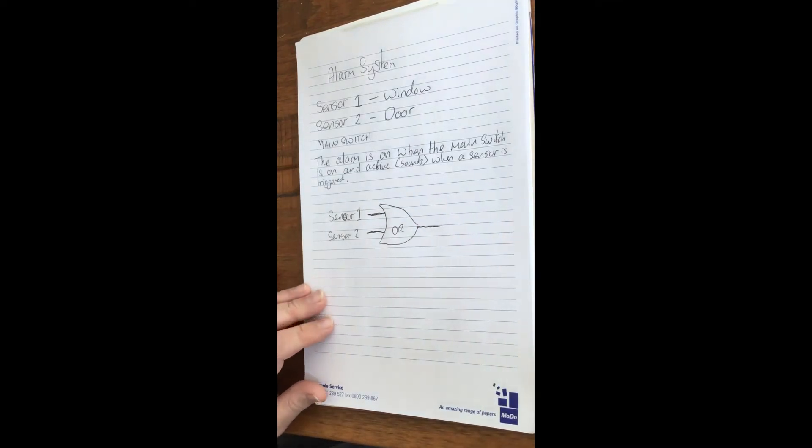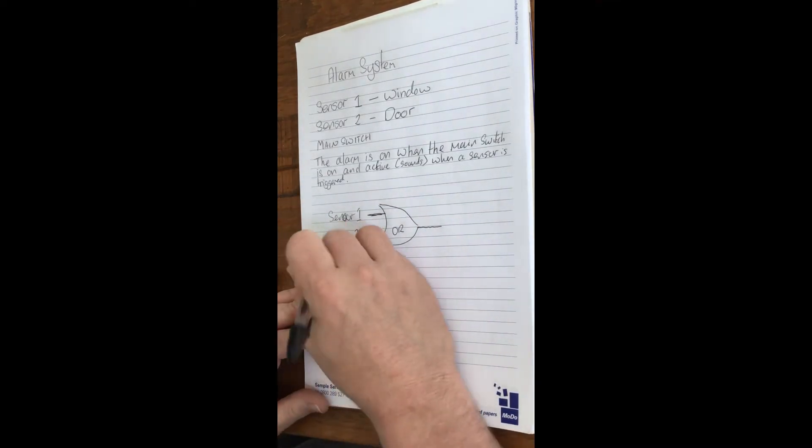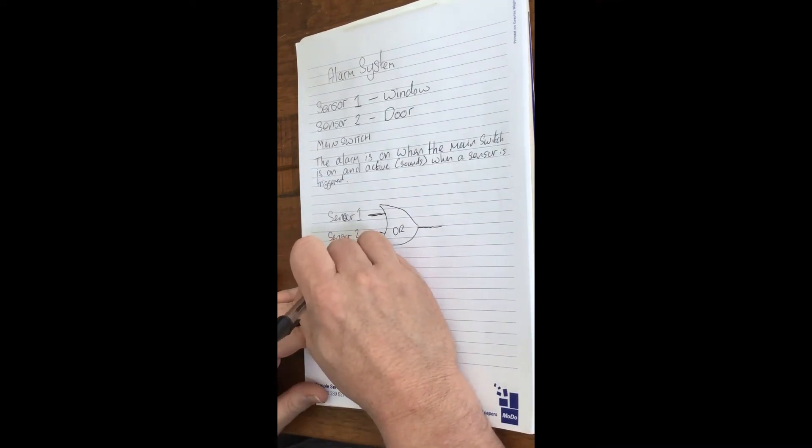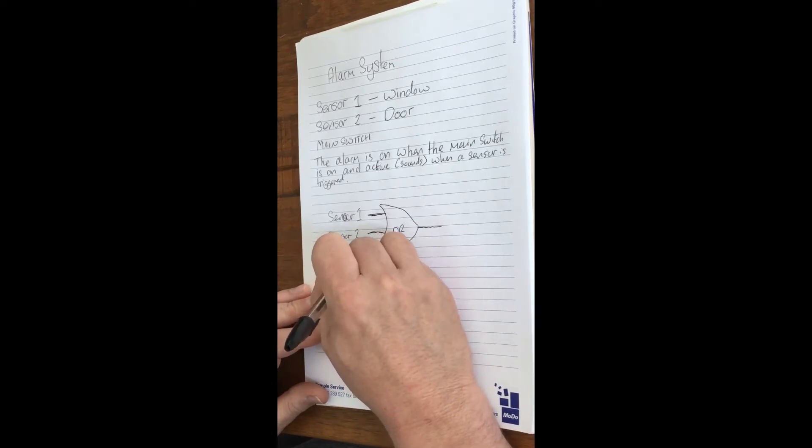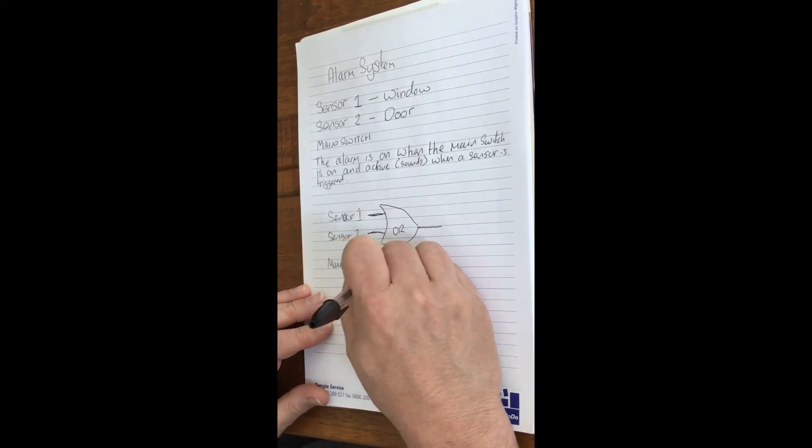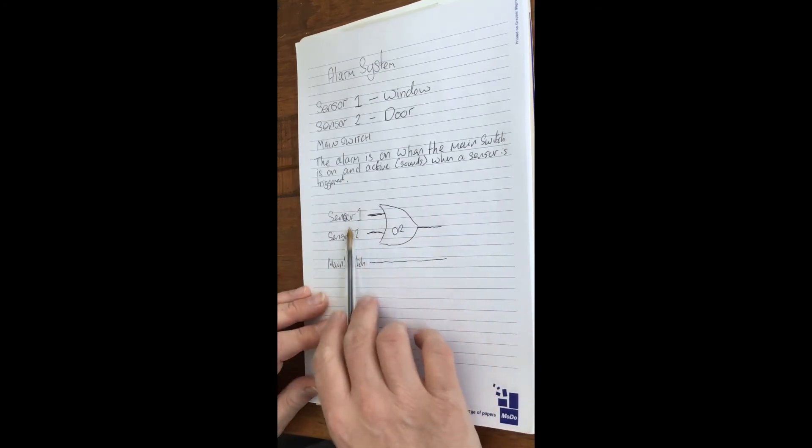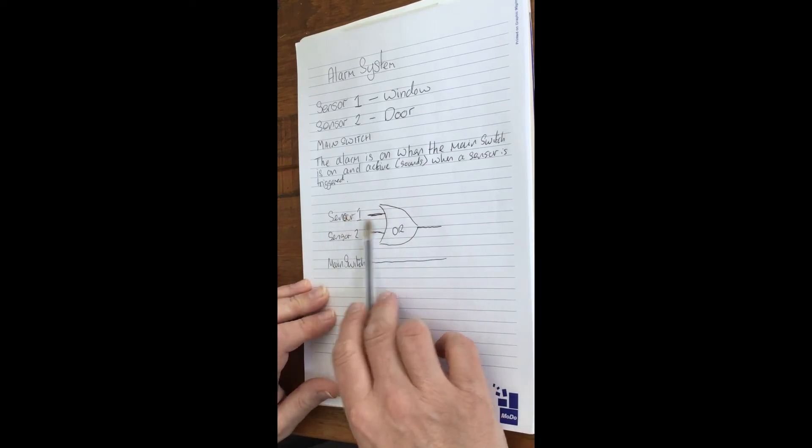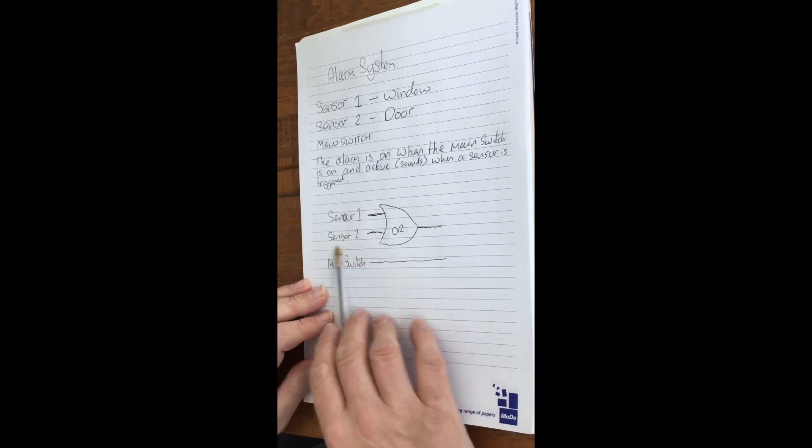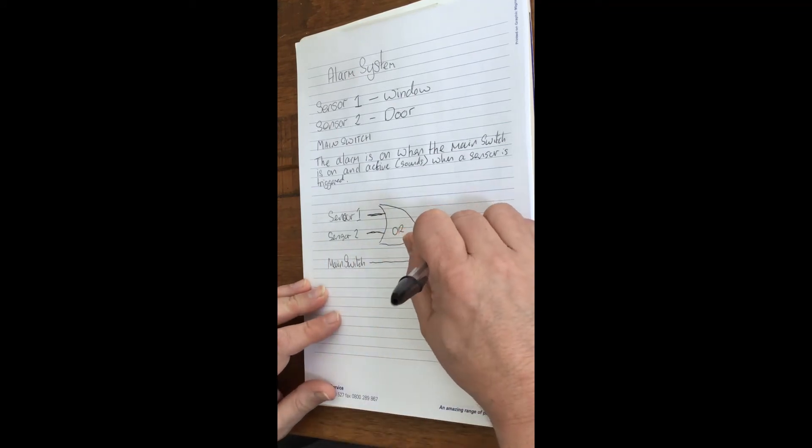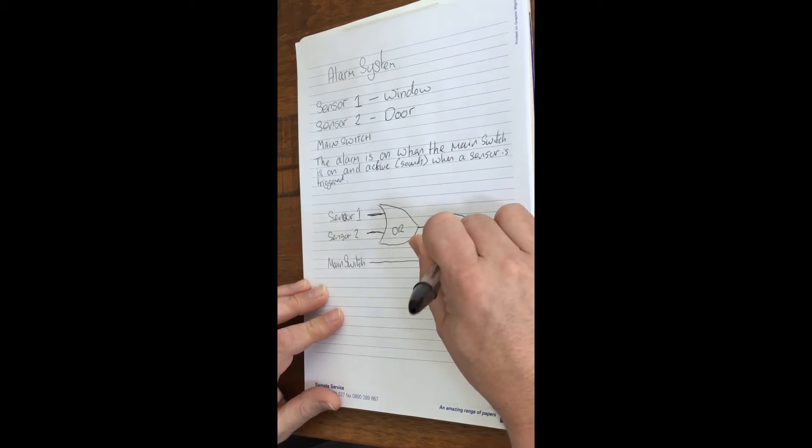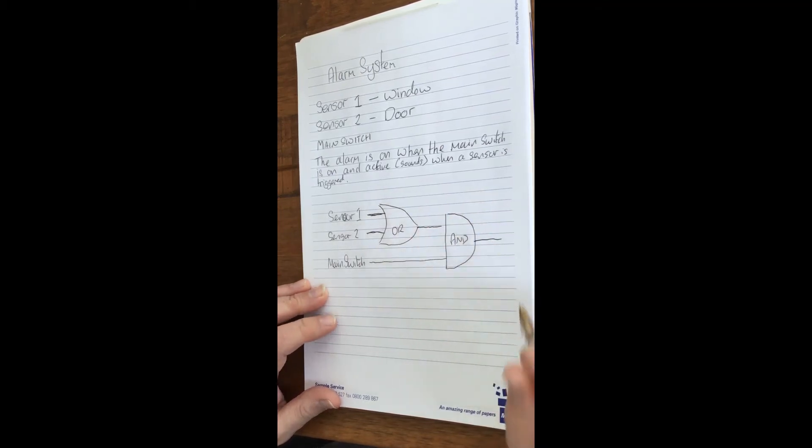But then we've got the main switch as well. The main switch will essentially activate these sensors, so the alarm will only go off if a sensor has been activated and the main switch is on. So this is going to be an AND gate.